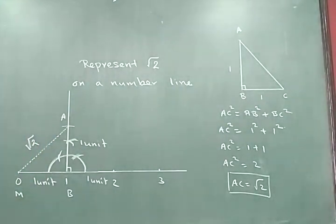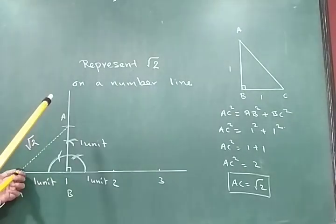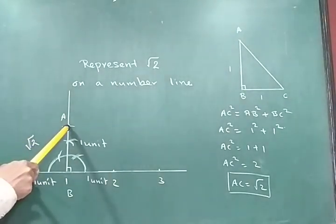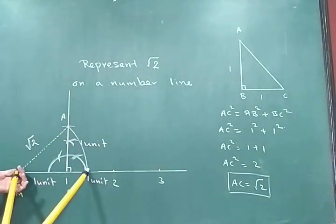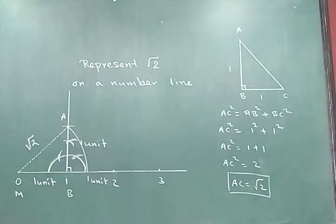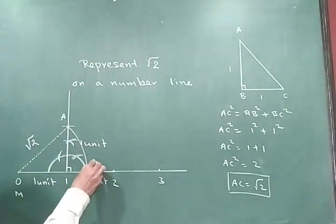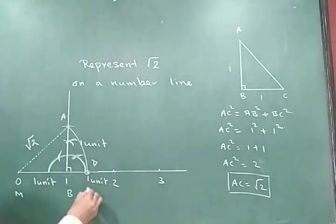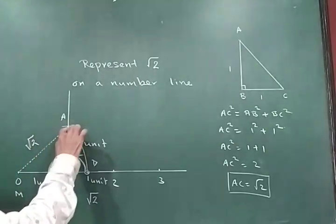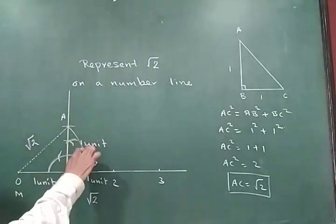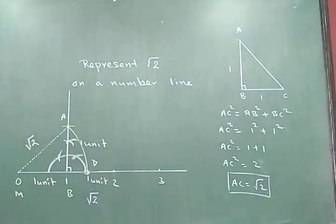So now I am going to take the value of the hypotenuse, that's root 2, and draw an arc to obtain point D. That represents root 2, because this root 2 is the radius of the curve, and this point D now represents root 2.